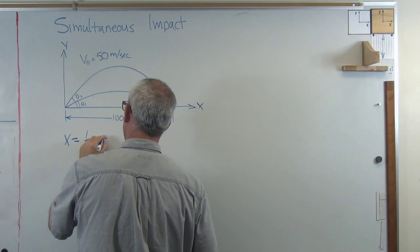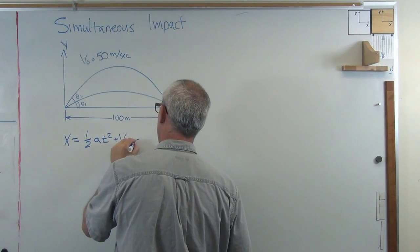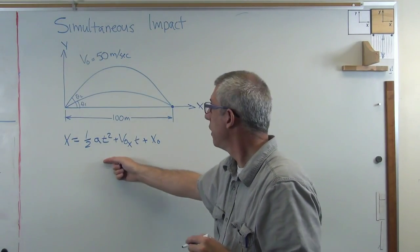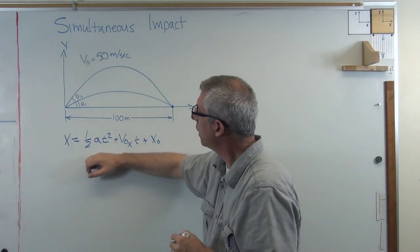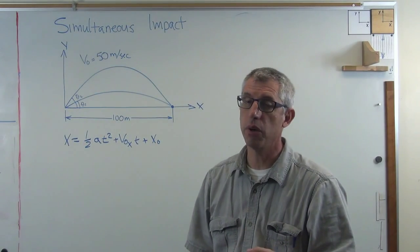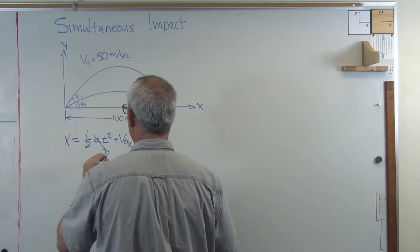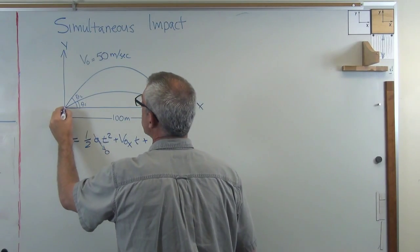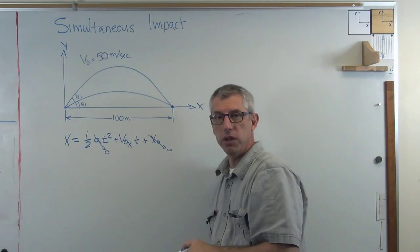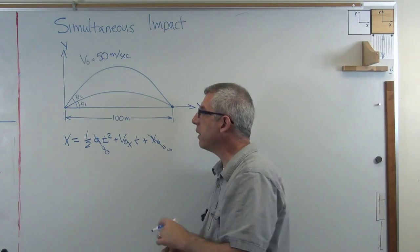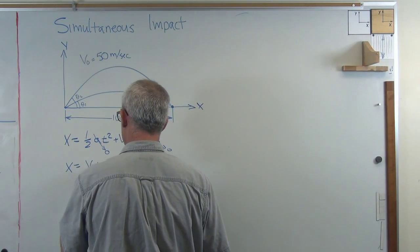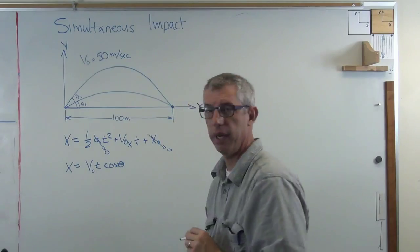I'm going to write out the stock equation for position as a function of time. Eventually what I'm going to do is I'm going to solve this for t and substitute in. But here's the position as a function of time in the x direction. Now I said there was no aerodynamic drag so that means there's no acceleration in the x direction. So Ax goes to zero and I'm starting at the origin of the coordinate system so x₀ goes to zero. And the other thing I want to note here is that v₀x is v₀ times cosine theta. So I've got x equals v₀ times t times cosine theta. All right, so there's that.